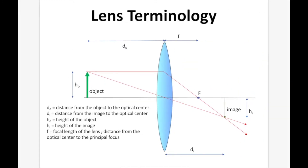On the diagram, DO is the distance from the object to the optical center — measured from the middle of the lens, not from the edge. DI is the distance from the image to the optical center, again measured from the middle of the lens to the image. HO is the height of the object, HI is the height of the image, and F is the focal length, which is the distance from the optical center to the principal focus — from the middle of the lens to the focal point.